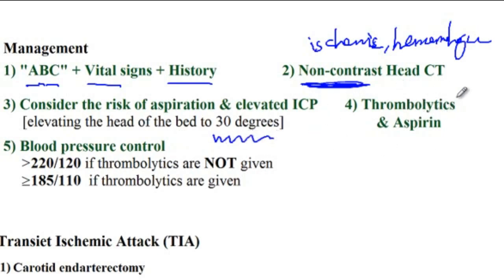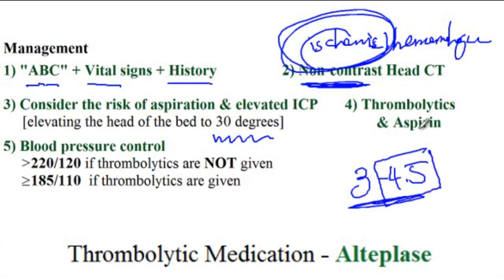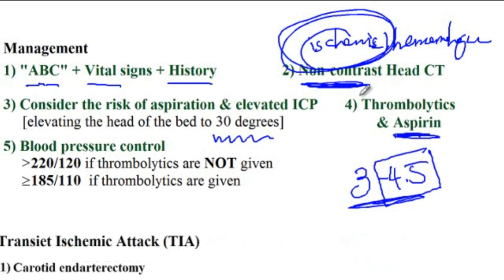Depending on the type of stroke, if dealing with ischemic stroke, provide thrombolytics within a three to four and a half hour window since the start of symptoms. In specialized centers, thrombolytics can be provided up to four and a half hours. For ischemic stroke, also provide aspirin. If the non-contrast head CT shows hemorrhagic stroke, thrombolytics and aspirin are contraindicated, which is why the CT must come first.